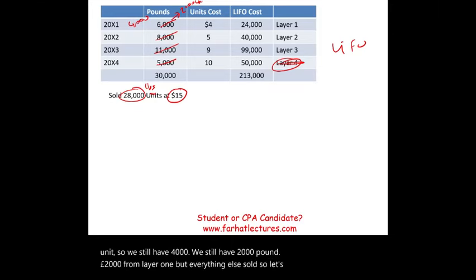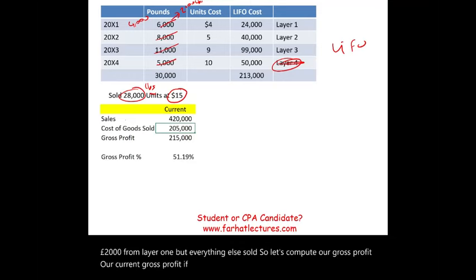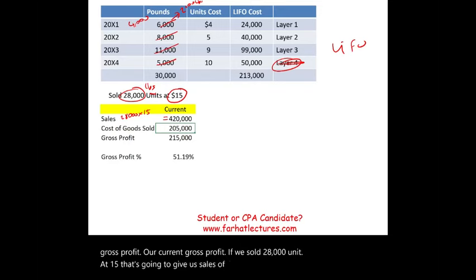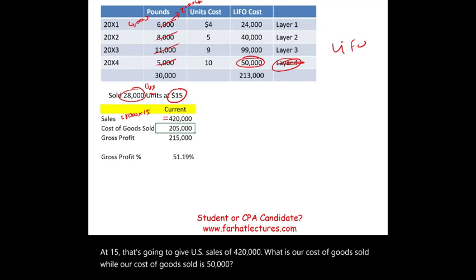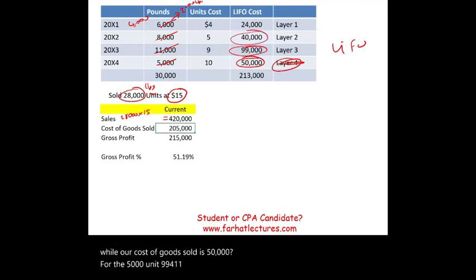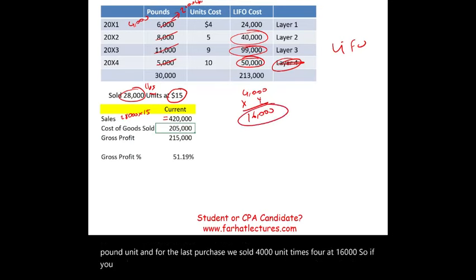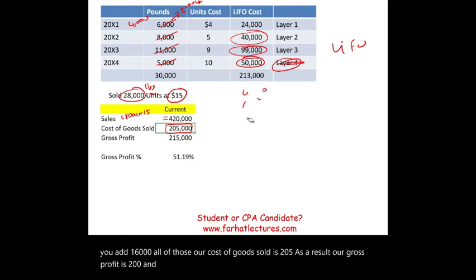Let's compute our gross profit. We sold 28,000 units at $15, giving sales of $420,000. Cost of goods sold: $50,000 for 5,000 units (Layer 4), $99,000 for 11,000 units (Layer 3), $40,000 for 8,000 units (Layer 2), and $16,000 for 4,000 units from Layer 1. Total cost of goods sold is $205,000, giving a gross profit of $215,000 — a gross profit percentage of 51.19%.